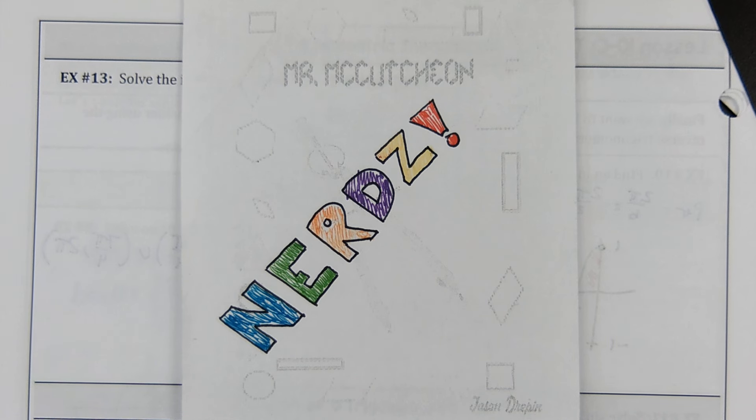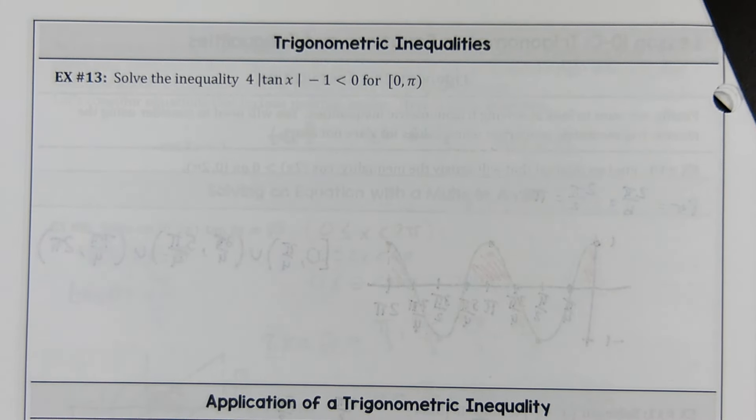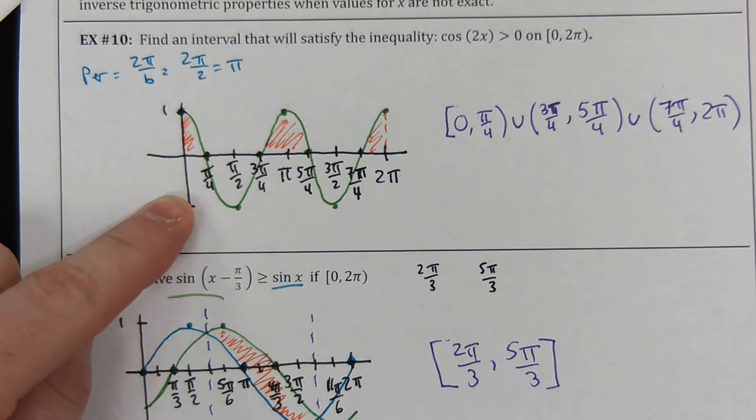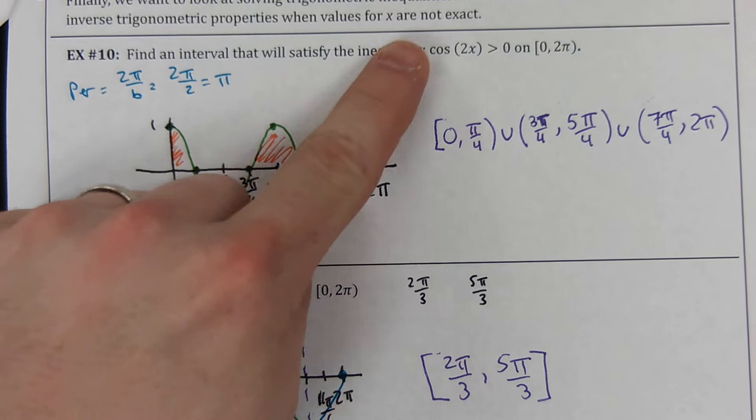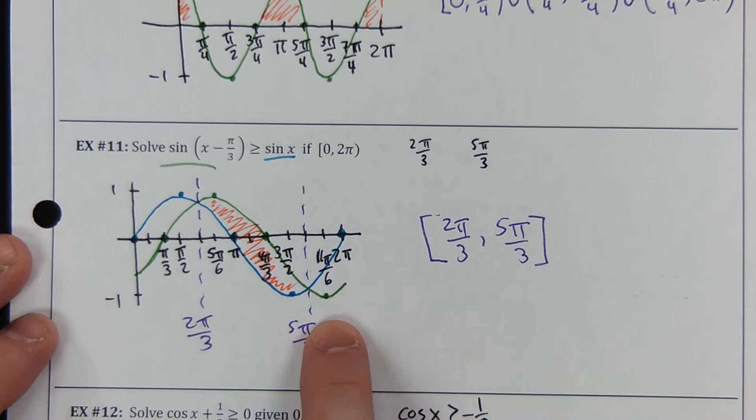Hey everybody, welcome back to the exciting conclusion of solving trigonometric equations and inequalities. We finished up yesterday by solving some inequalities. We did this one by hand because we were able to figure out where cosine of 2x actually hits the x-axis.